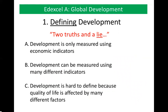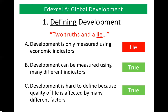For the final task, identify two truths and a lie from these three statements: A — development is only measured using economic indicators; B — development can be measured using many different indicators; C — development is hard to define because quality of life is affected by many different factors. The answer: A is the lie, B is a truth, and C is a truth. Well done if you got that right. I hope you found this lesson helpful — keep going back to it and take notes to add to what you'll be learning about development in September.